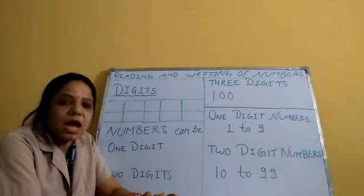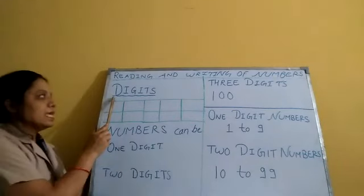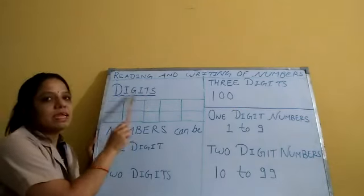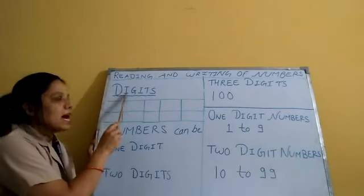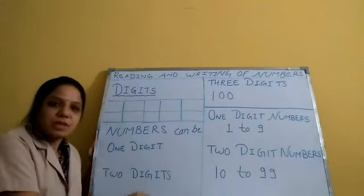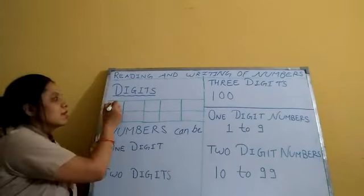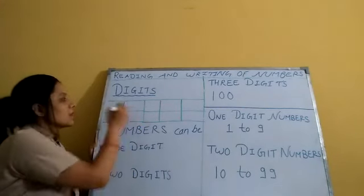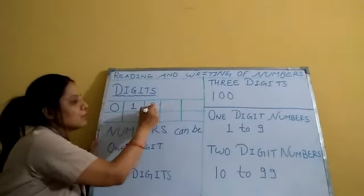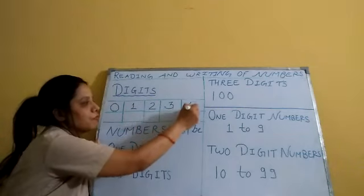Today I am introducing a new word for you: that is D-I-G-I-T-S, digits. What is the meaning of digits? You know very well. See here: 0, 1, 2, 3, 4.